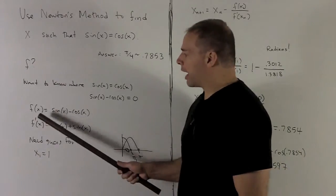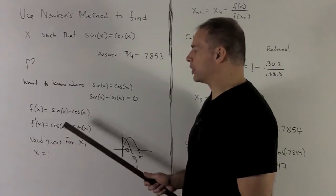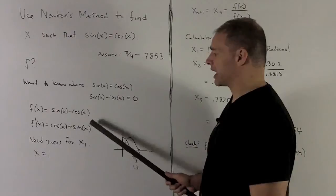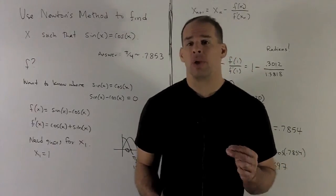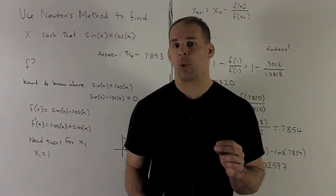With that, f prime of x, the derivative, is going to be cosine x plus sine of x. I have almost everything I need. The only thing left is I need a good guess for my x1.